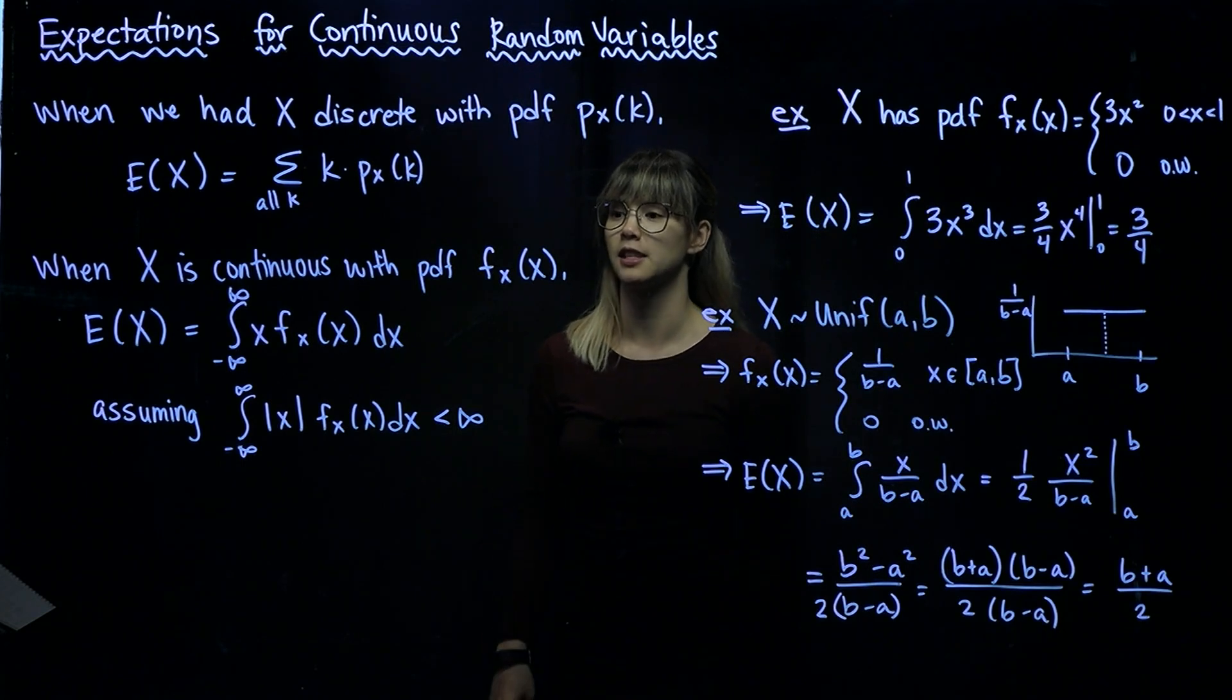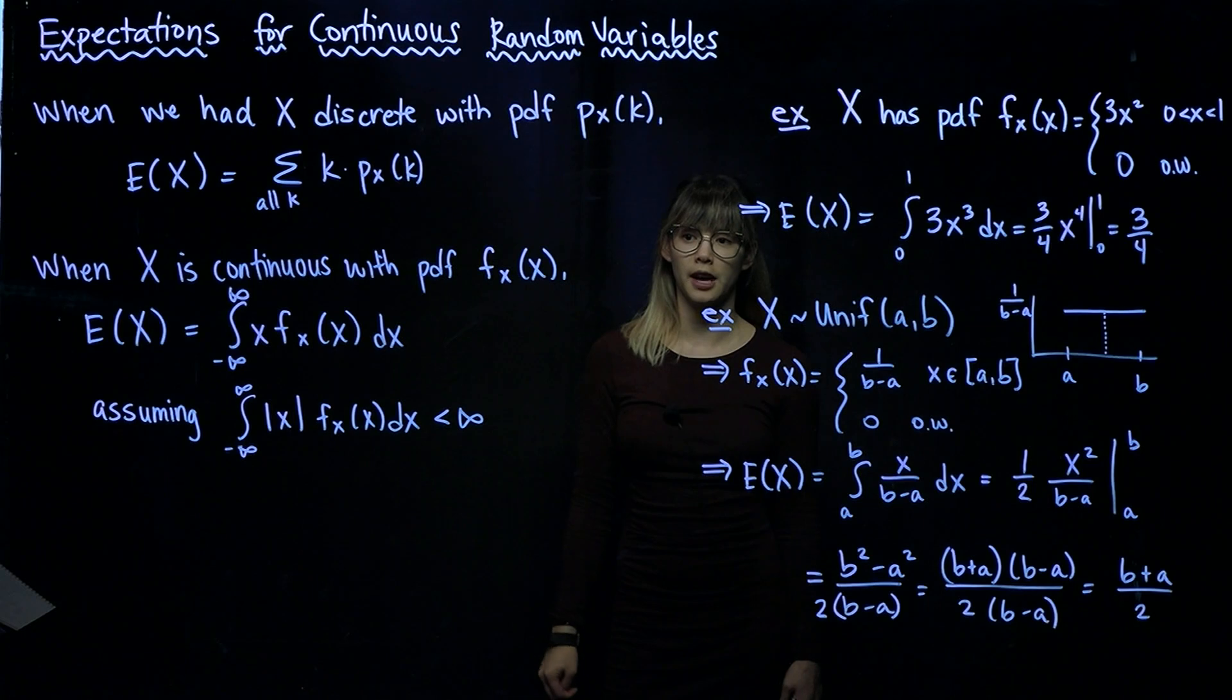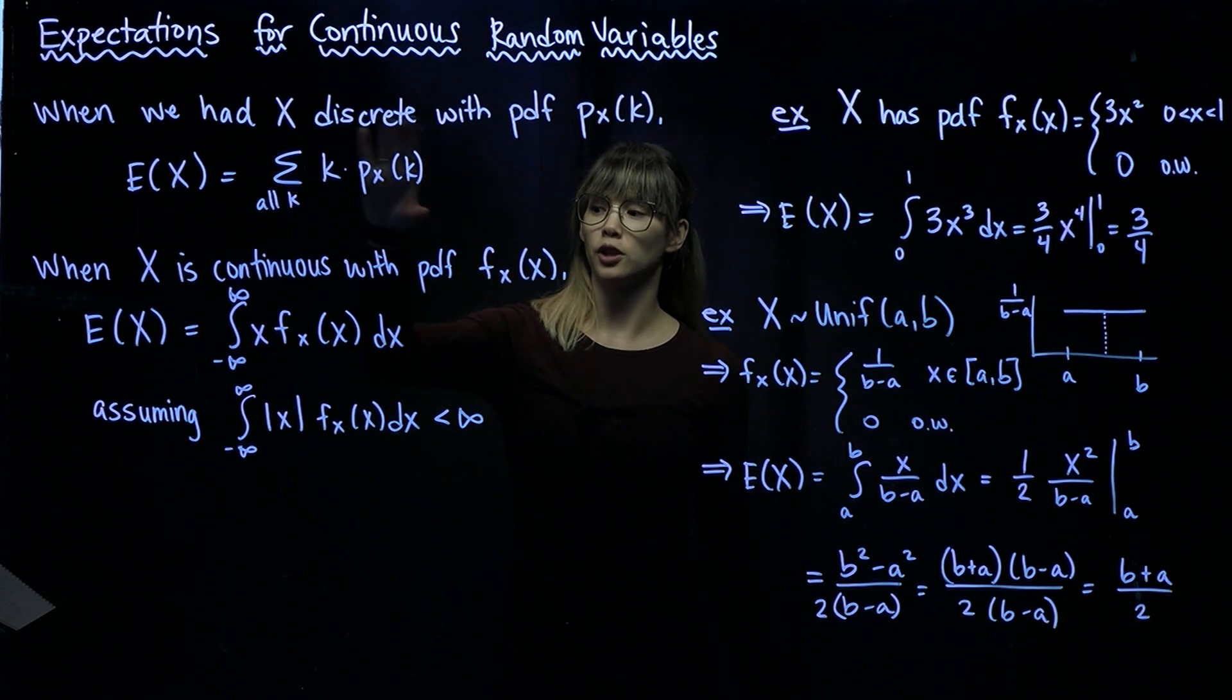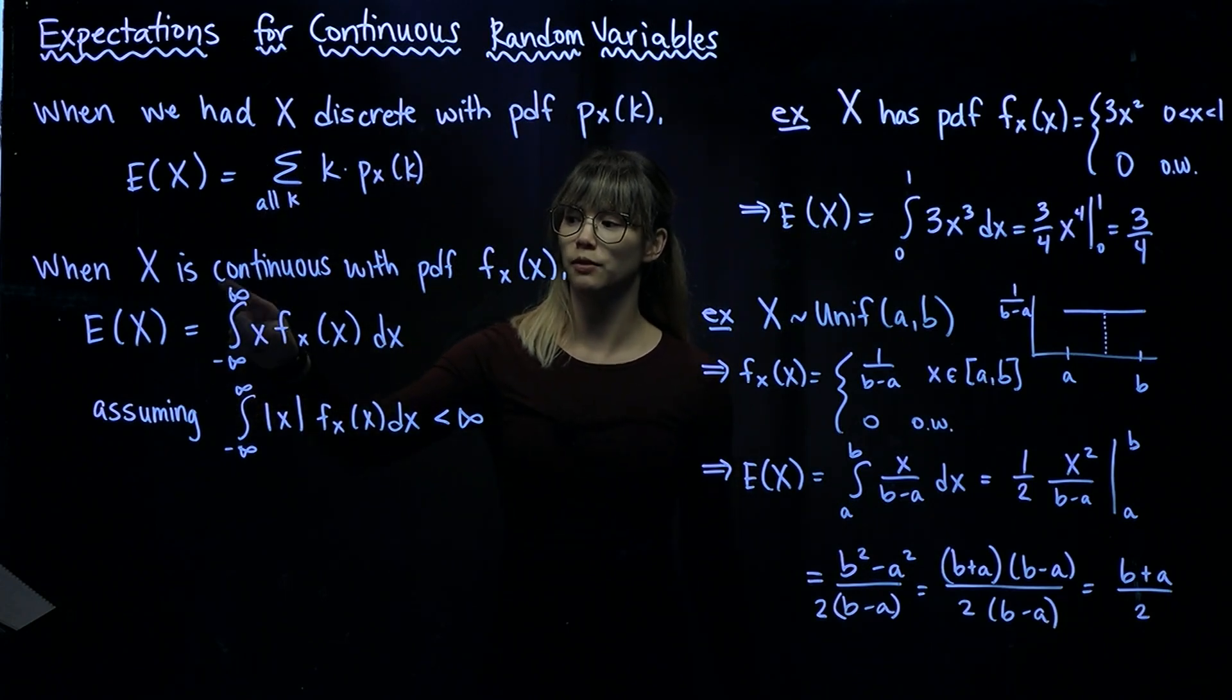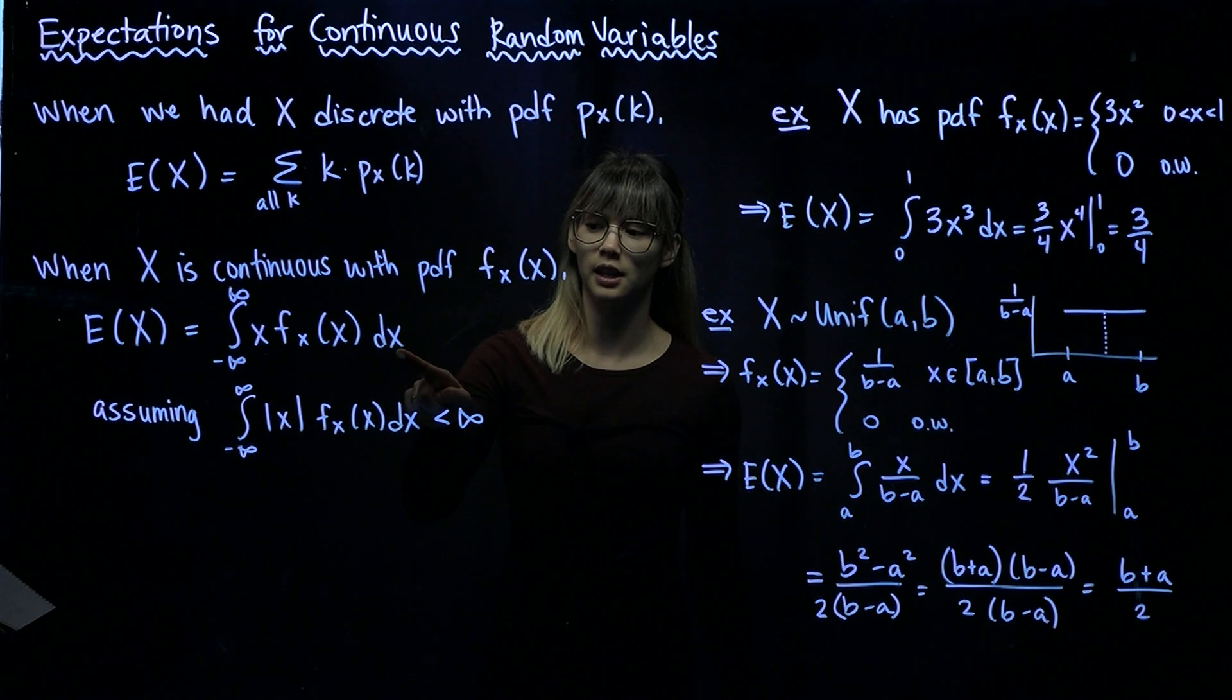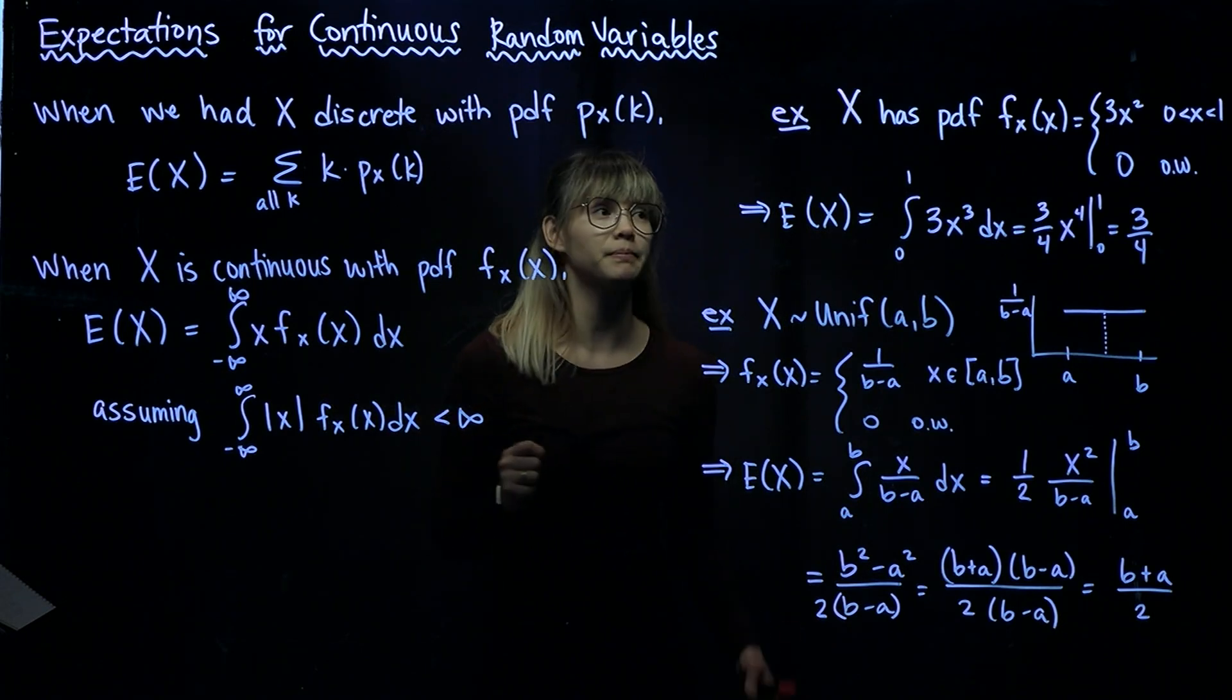Now, we'll have a similar thing in the continuous case. So if X is a continuous random variable with PDF F sub X of X, then the expected value of X is going to be equal to the integral version of this. So we're going to integrate over negative infinity to infinity, and we're going to have X times its PDF, and we're going to integrate with respect to X. So this will be the expected value of X, assuming that this integral converges absolutely.